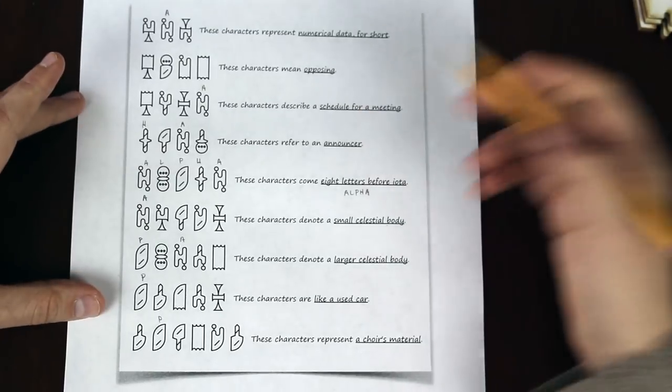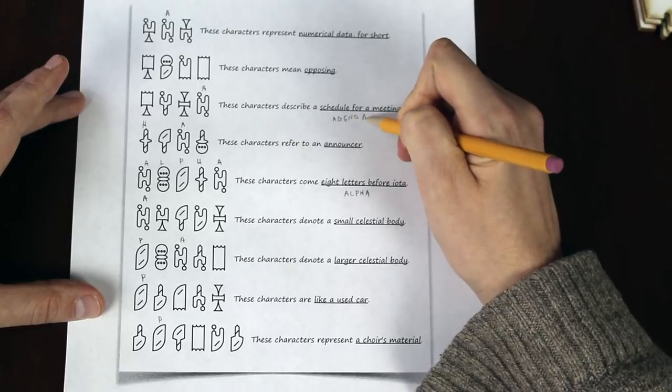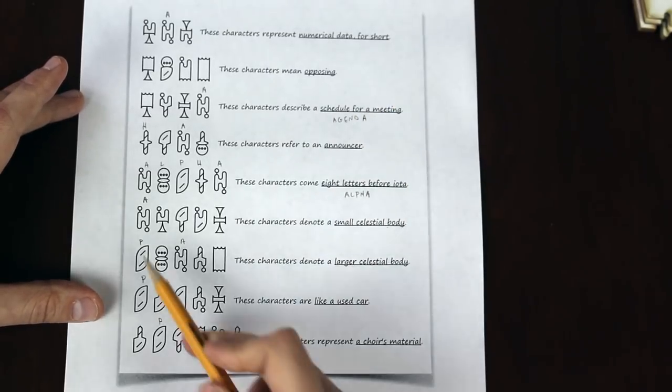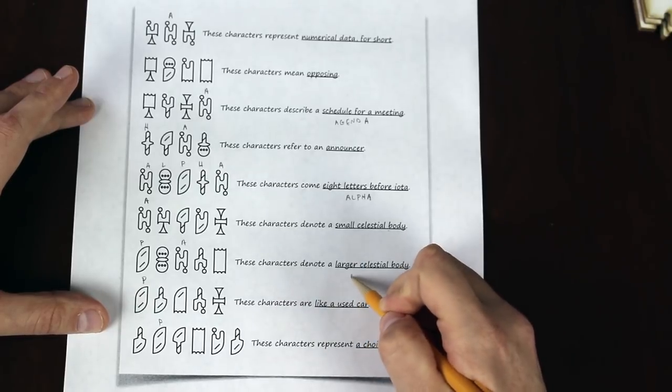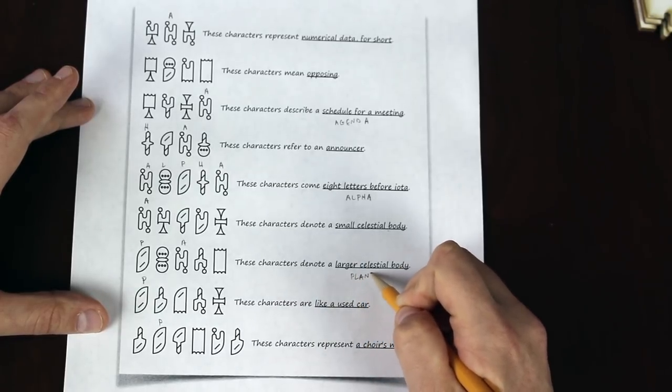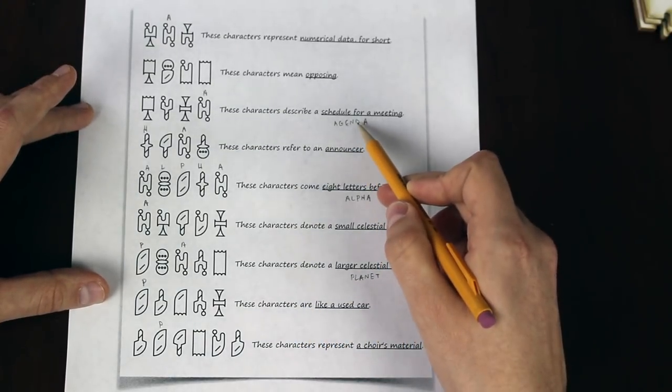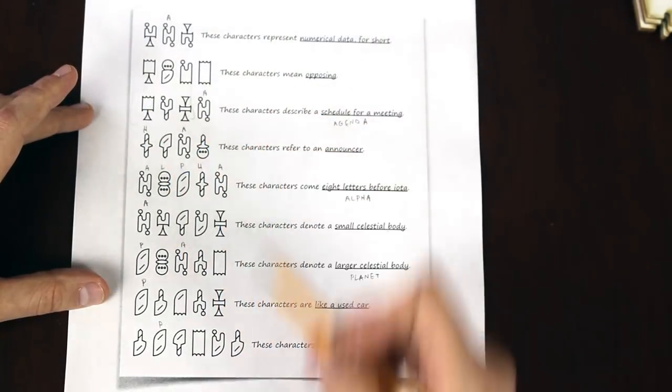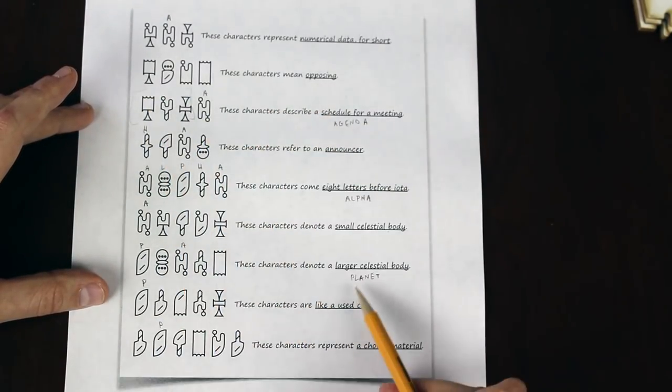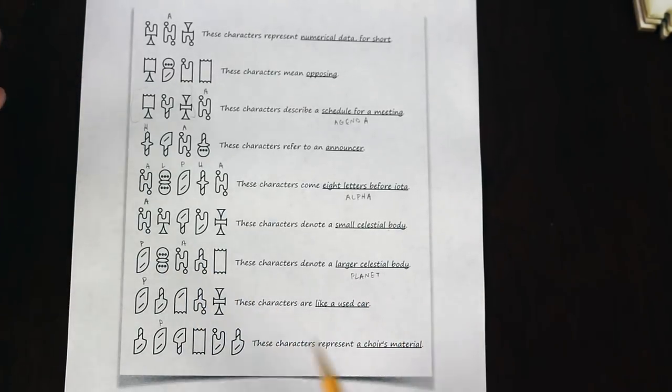the next one that I got was schedule for a meeting, which was agenda. And with a P blank A and large celestial body, this made sense to me to be planet. And now you see we have a problem. We need to fit five letters with three symbols here. And we need to fit four symbols for three symbols here. It must be that some of the symbols correspond to two letters.